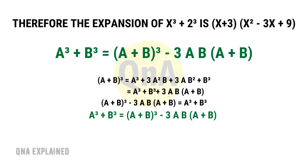a cubed plus b cubed equals a plus b cubed minus 3ab times a plus b. Rearranging: a plus b cubed minus 3ab times a plus b equals a cubed plus b cubed. Therefore, a cubed plus b cubed equals a plus b cubed minus 3ab times a plus b.